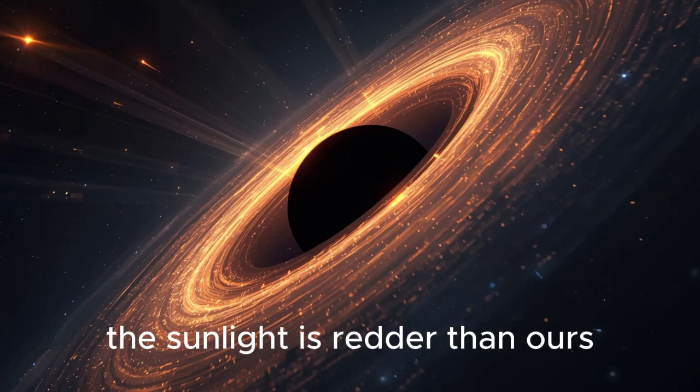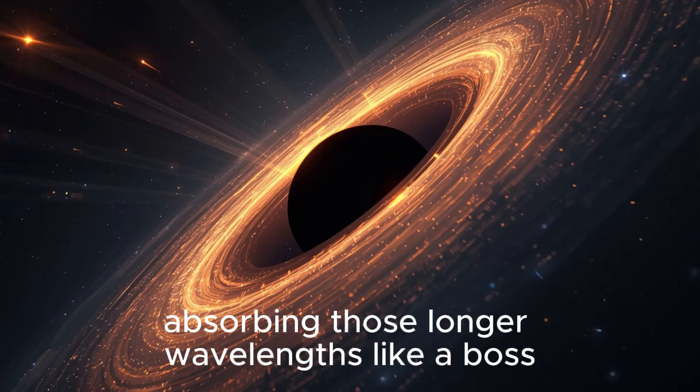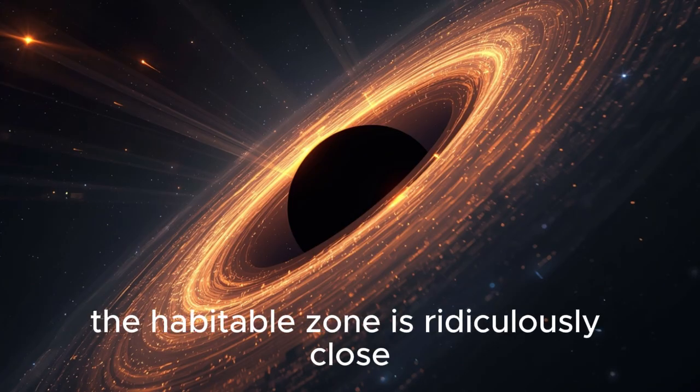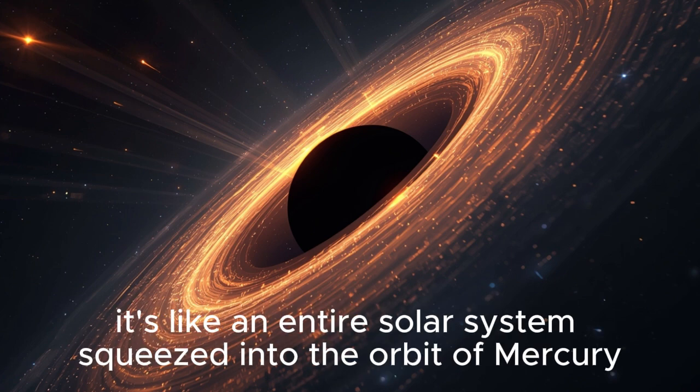The sunlight is redder than ours, so any vegetation would look black or deep purple to our eyes, absorbing those longer wavelengths like a boss. And because the star is small and cool, the habitable zone is ridiculously close, meaning all seven planets are packed tighter than the moons of Jupiter. It's like an entire solar system squeezed into the orbit of Mercury.